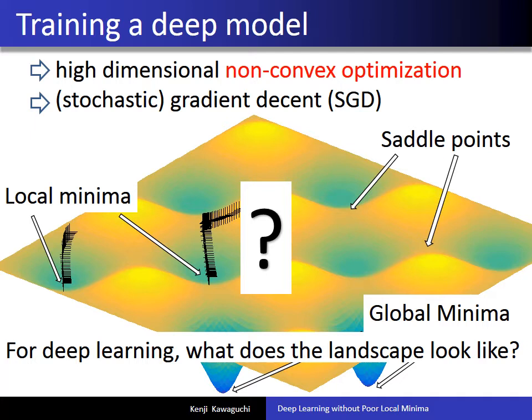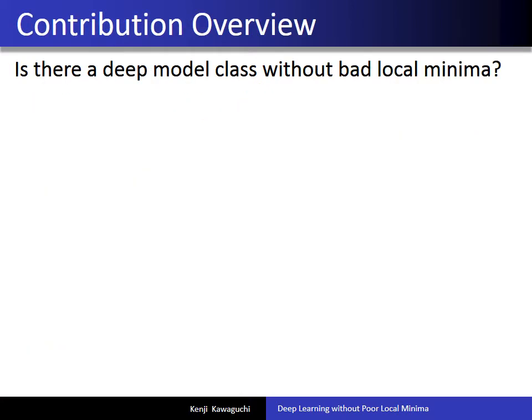In deep learning, there are various types of landscapes depending on various architectures. So instead of thinking about landscapes in general, one more concrete question is: is there at least a deep model class without bad local minima? In other words, can we at least prove the existence of a deep model class without bad local minima? One of the contributions of this paper is to prove that the answer is yes.